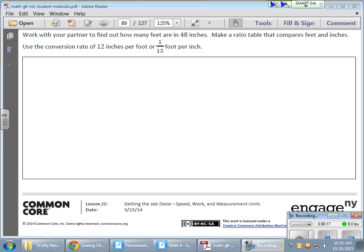So here we have, we need to find out how many feet are in 48 inches. So it says make a ratio table that compares feet and inches. Use a conversion rate of 12 inches per foot or one twelfth foot per inch. So we're going to do both. So here we go. Let's begin.